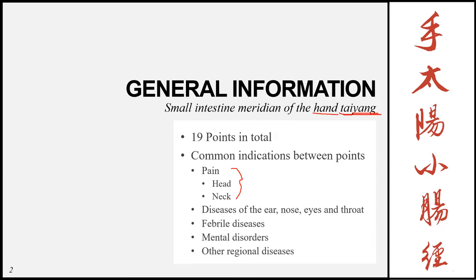The third and fourth indications are for febrile diseases and mental disorders. This is because of its interior-exterior partner, the heart. The heart meridian can be used for both febrile and mental disorders, and because these two meridians are linked, this meridian also has actions on conditions affecting the heart, and therefore can be used for febrile diseases or mental disorders. Finally, it can also be used for other regional diseases along the flow of the meridian from the hand all the way up to the head.